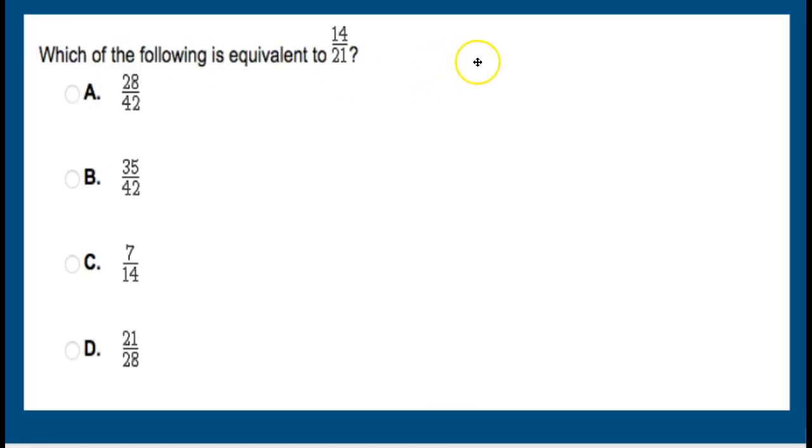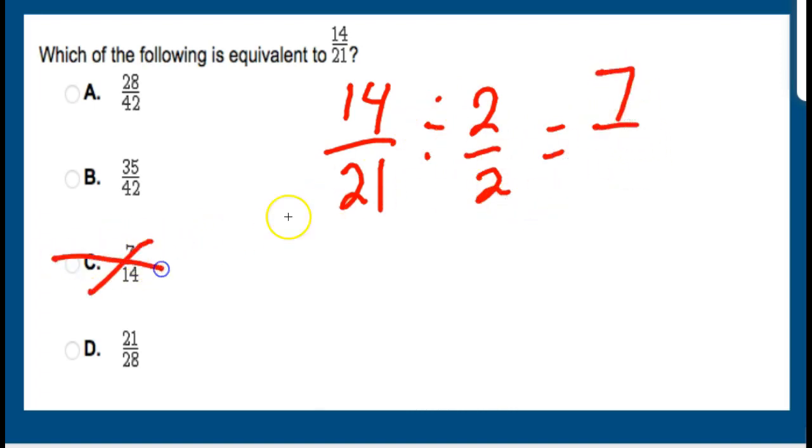Let's look here. We have, which of the following is equivalent to 14 over 21? My first question is, can I reduce this down? When I'm looking at my answers here, that one's greater, that one's greater, that one's less, that one's greater. 7/14. Can I reduce this to 7/14? Well, 14 divided by, let's see if I do the 2 over 2, that gets me the 7, but 21 divided by 2 does not get me the 14. This is not going to reduce in that manner.